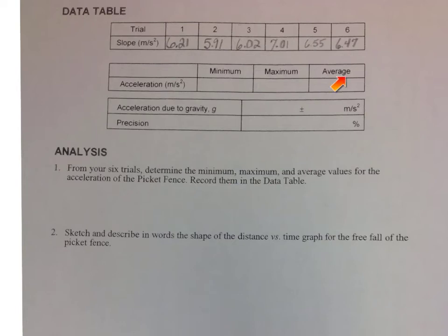To find the minimum and maximum, you're just going to scan your data. Looking at what's your lowest number, what's your highest number. So my minimum is this number here, so I'm just going to record that down here, 5.91. My maximum is 7.01.